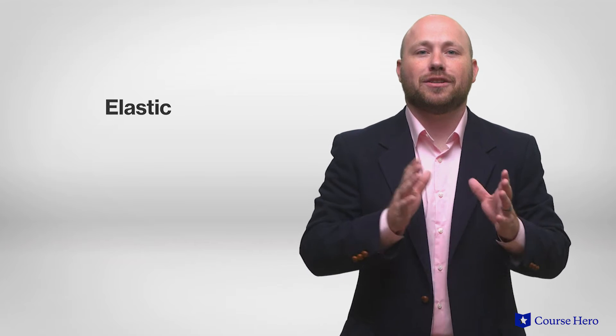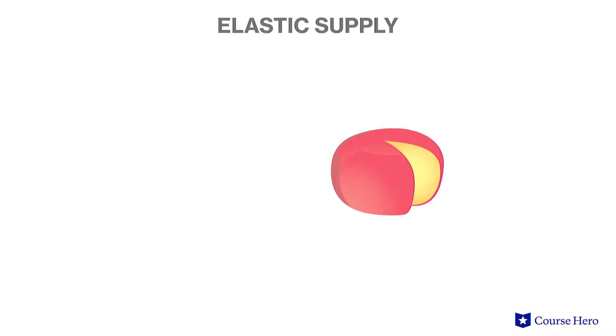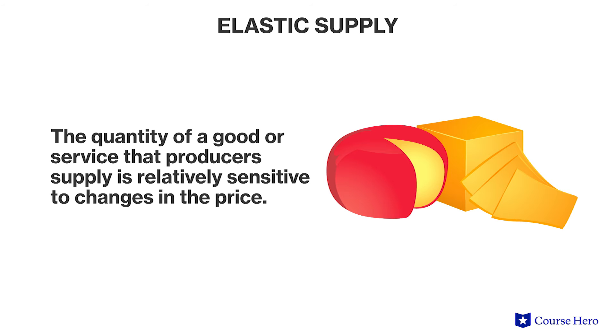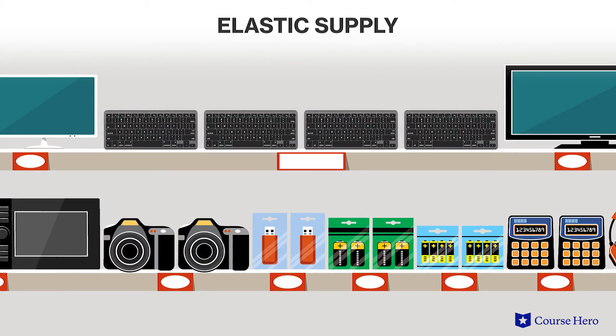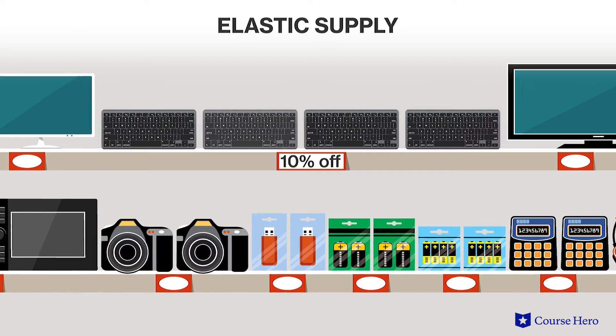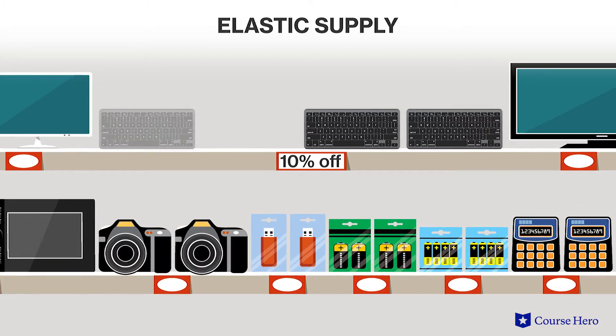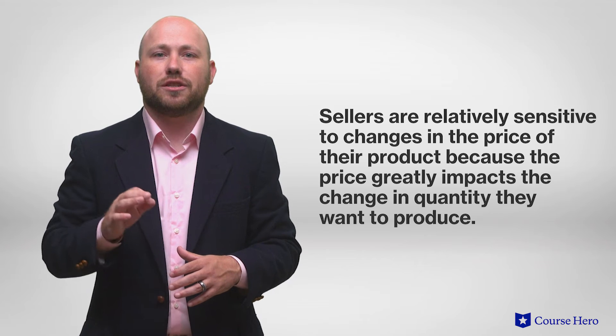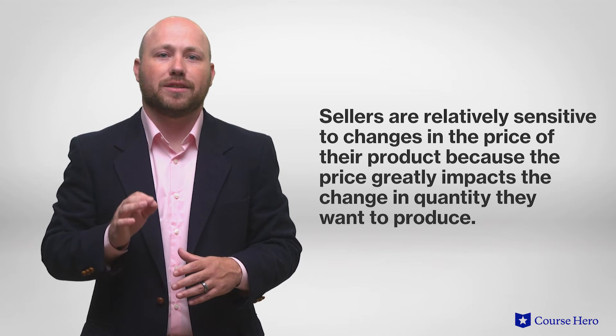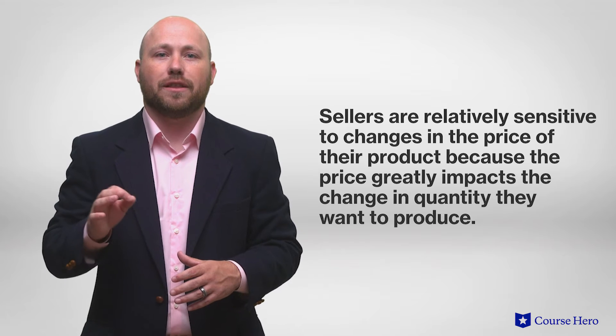Much like demand, supply elasticities can be classified as being elastic or inelastic. An elastic supply occurs when the quantity of a good or service that producers supply is relatively sensitive to changes in the price. The percentage change in quantity supplied is larger than the percentage change in price. This means that if the price of a good or service decreases by 10%, sellers reduce the quantity they supply by more than 10%. Sellers are pretty sensitive to changes in the price of their product because price greatly impacts the change in the quantity they will want to produce.